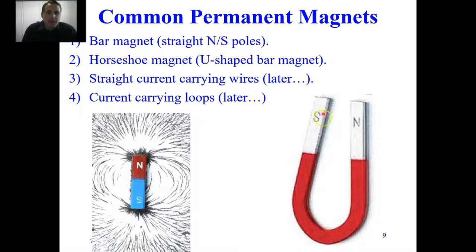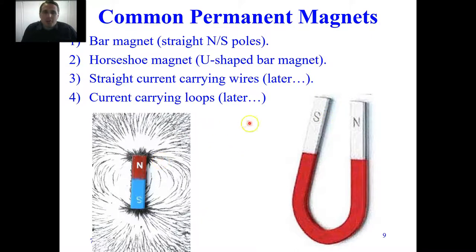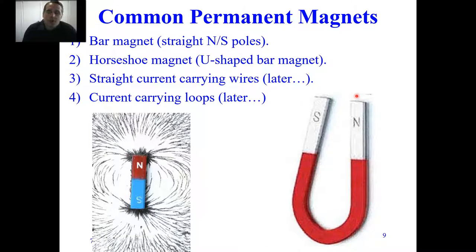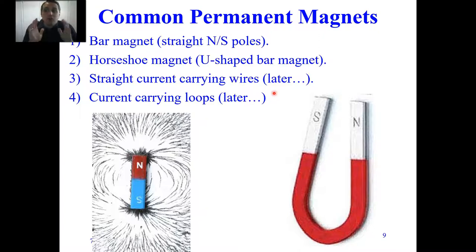A horseshoe magnet is basically a U-shaped bar magnet. Part of the reason we use horseshoe magnets is to pick up ferromagnetic materials from the same side — for example, moving a horseshoe magnet over a construction site to pick up nails, which have iron in them. Straight current-carrying wires and current-carrying loops also produce magnetism — that's also moving electric charge — but I won't get to that until the next lecture.